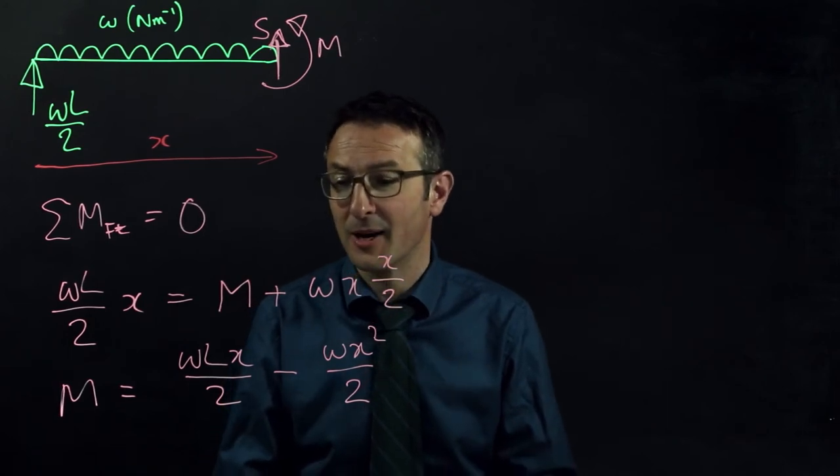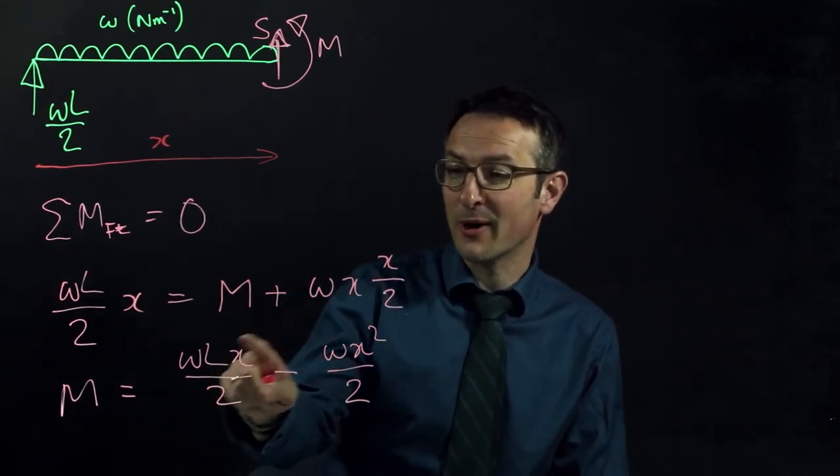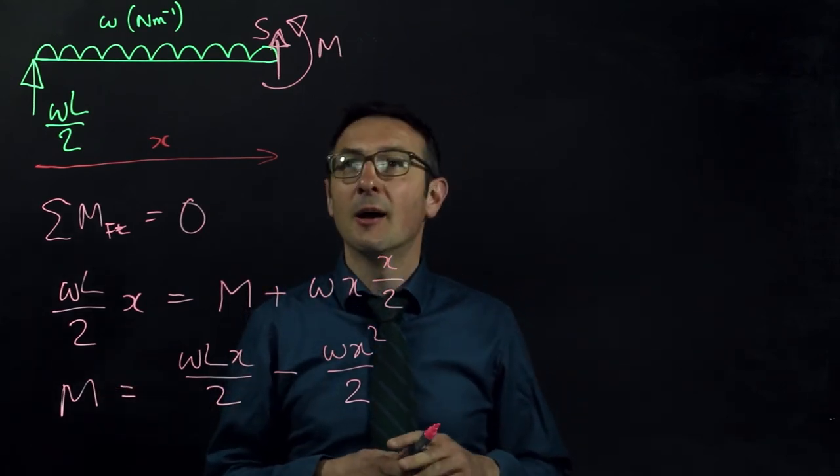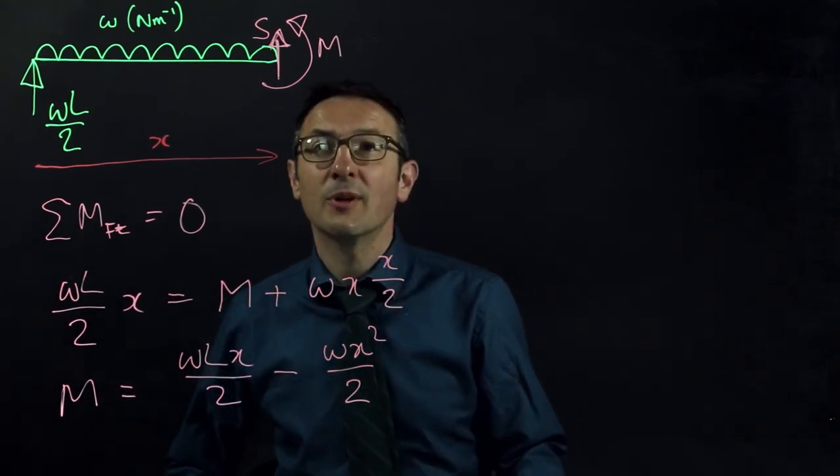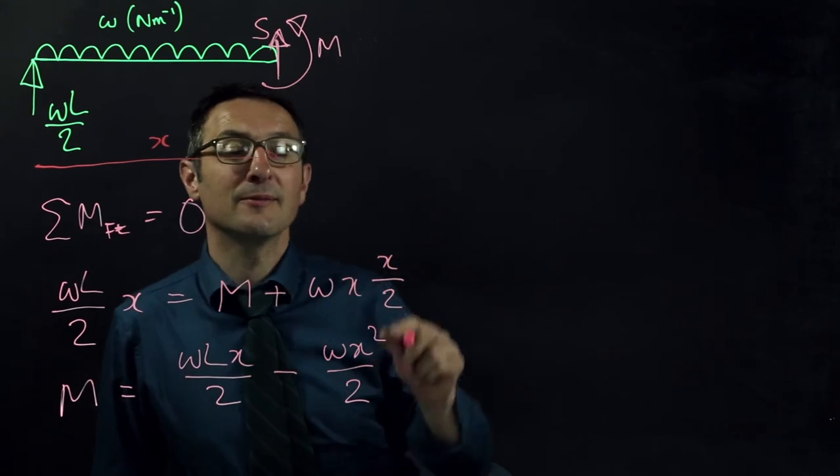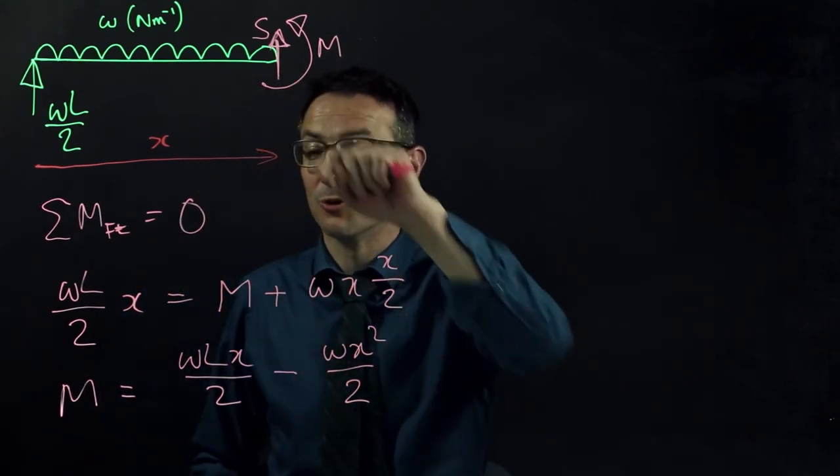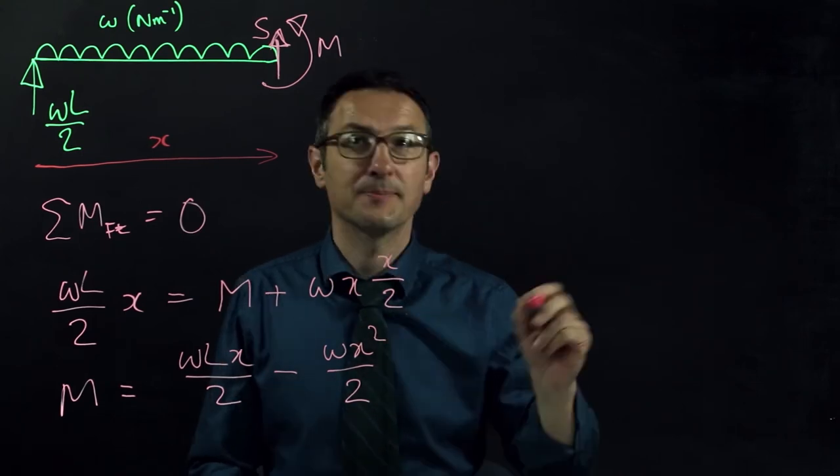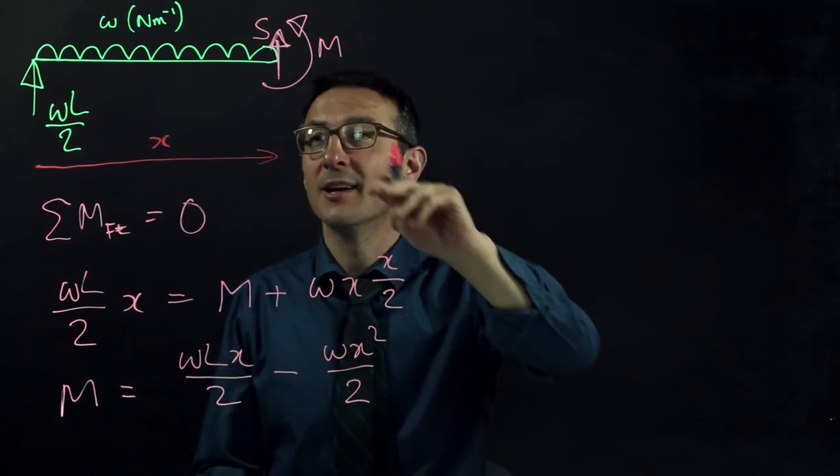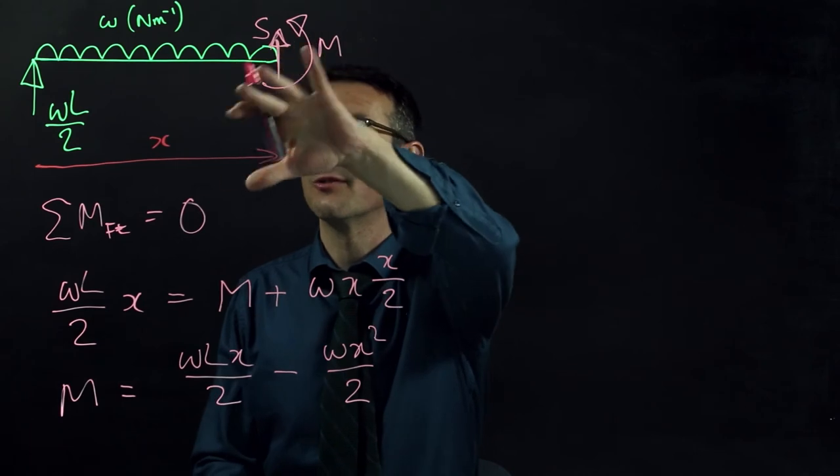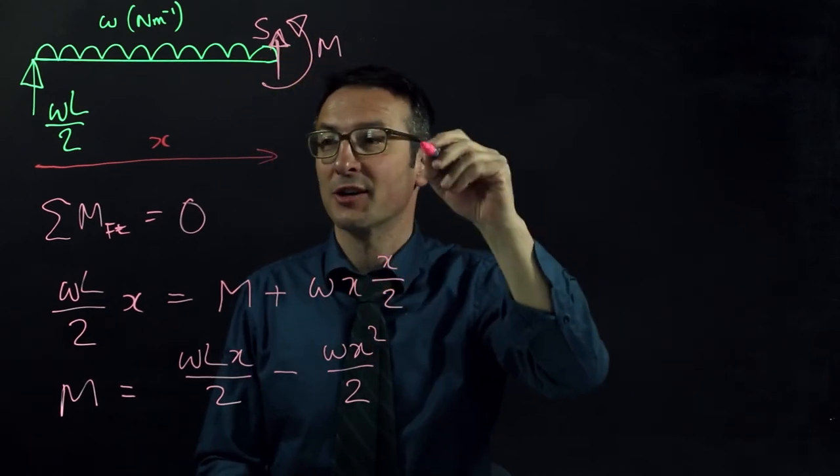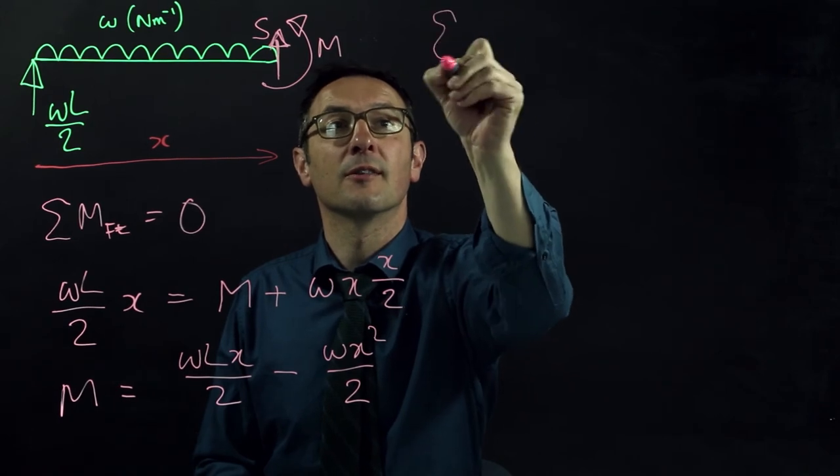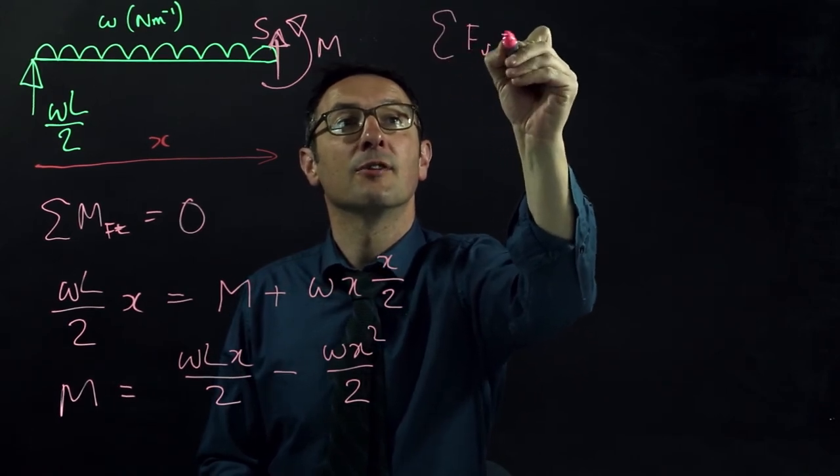We could use some simple differentiation to find where that function gives us a maximum value to find the maximum value of M. I'll get there another way. We know the maximum value M will occur when the shear force is 0, so let's also quickly derive the shear force. We do that in the same way. It's a free body diagram. All of these forces sum to 0 in any direction. The quickest way to get to the shear force is to look at the sum of the vertical forces.